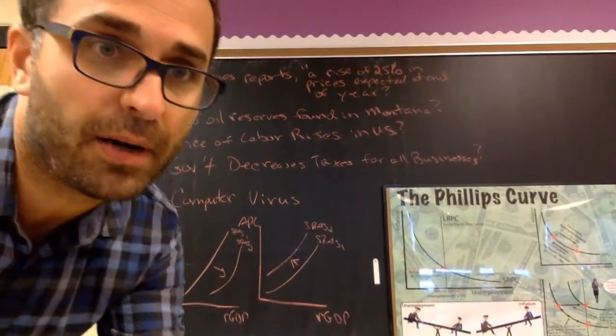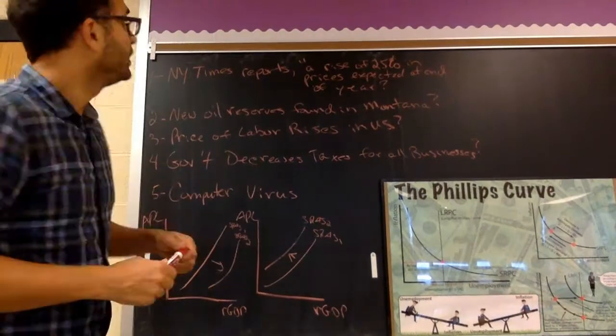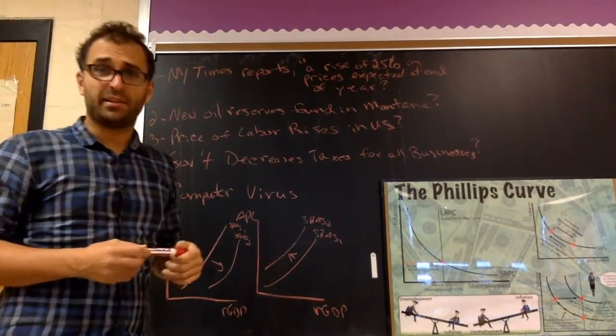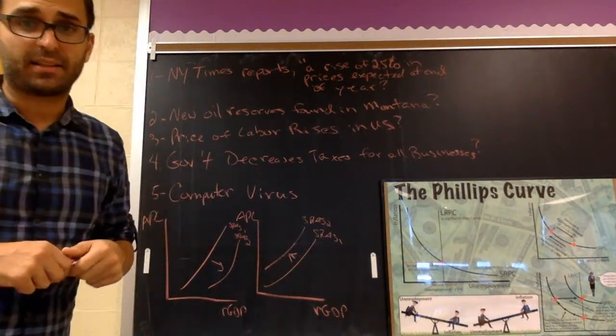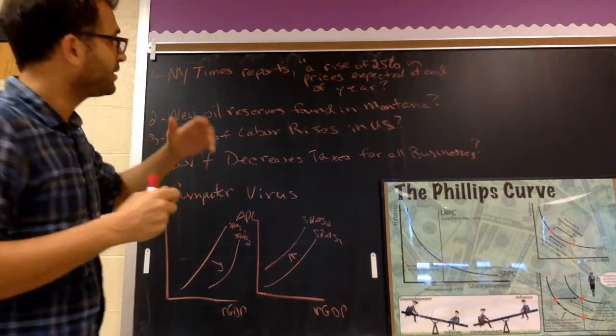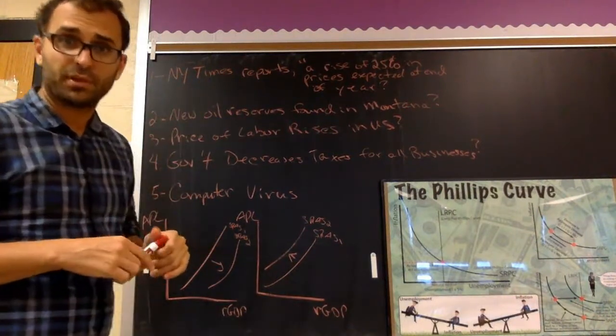Now a couple of examples you can practice, and I'm going to go over them. You can pause the video. So the first one, New York Times reports a rise of 25% in prices expected at the end of the year. If they expect prices to rise at the end of the year, that will increase the labor costs. Aggregate supply will shift to the left. The short one will shift to the left.